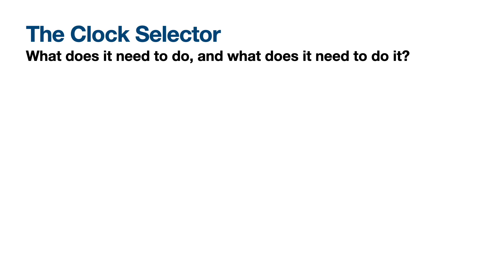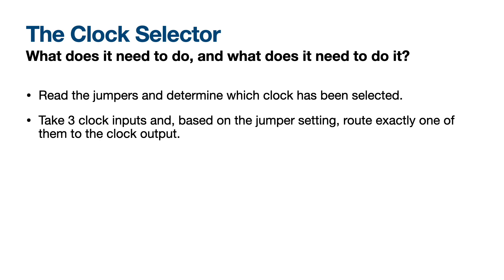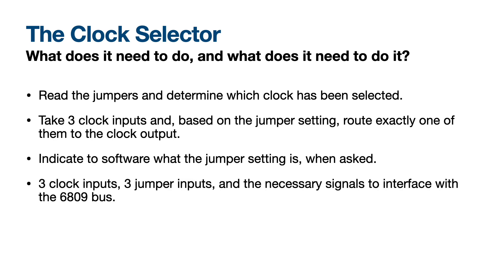Thinking about what the clock selector needs to do: first, it needs to read the jumpers to determine which clock has been selected — using combinatorial logic, this happens continuously. Based on the jumper setting, it needs to route exactly one of the three clock inputs from the counter chip to the clock output. Finally, when a program running on the CPU asks, it needs to present a read-only clock speed register so the program can calibrate delay loops. In terms of I/O, it needs three clock inputs, three jumper inputs, a handful of 6809 bus interface signals, a clock output, and eight data outputs for the clock speed register.